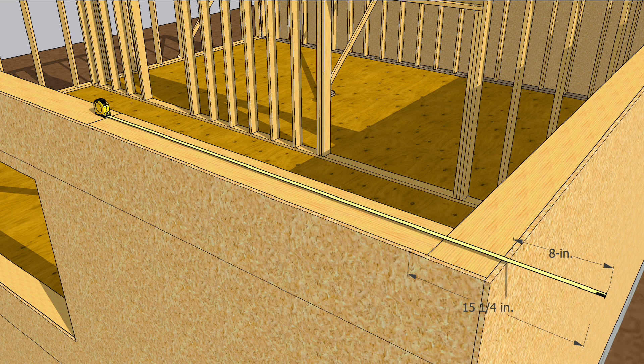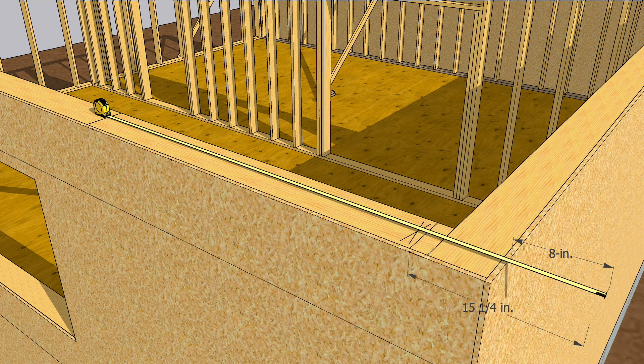Burn 8 inches on your tape at the edge of the sheathing to account for the overhang, and then mark 15 and a quarter to put the center of that first rafter 16 inches from the edge of the roof. Now, mark every 16 inches.